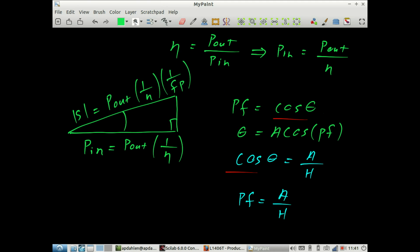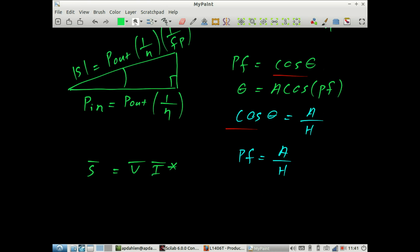At this point in the problem, we know the vector S. Recall S is equal to the voltage times the complex conjugate of the current. And it follows then that the current, the complex conjugate, is equal to S divided by V.